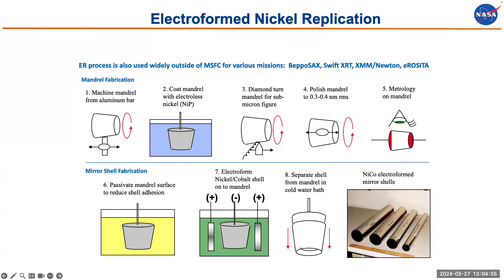The manufacturing process for full-shell replicated (Walter) optics starts from a mandrel coated with electroless nickel, then diamond-turned to achieve the exact parabolic and hyperbolic profiles, then polished with metrology feedback. Mirror shells are made by electroforming — electroplating nickel onto the mandrel to create the shell. The shell is then separated from the mandrel in a water bath using differential thermal contraction between the aluminum mandrel and the nickel shell.